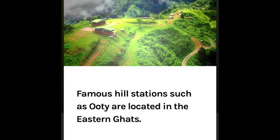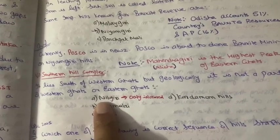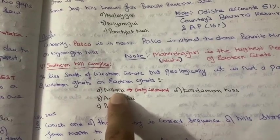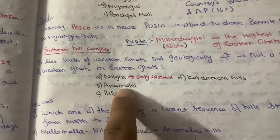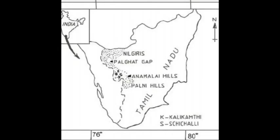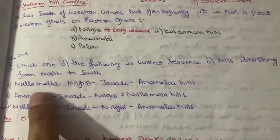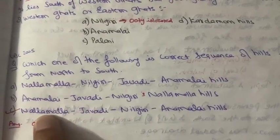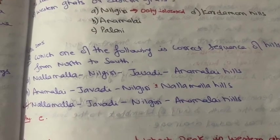Nilgiri Hills are located in Tamil Nadu, and Ooty is located there. An important point: if an exam asks where Western Ghats and Eastern Ghats meet, you should know this location. There are also important hills in Tamil Nadu: Annamalai Hills, Palani Hills, and Cardamom Hills. I'll show you on the map. A UPSC question asked: 'Which is the correct sequence of hills from north to south?' — you can only solve this with map knowledge.